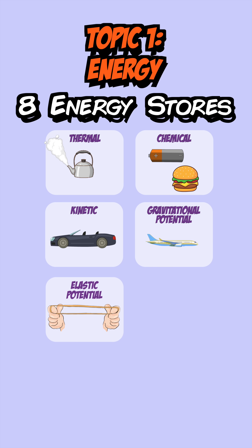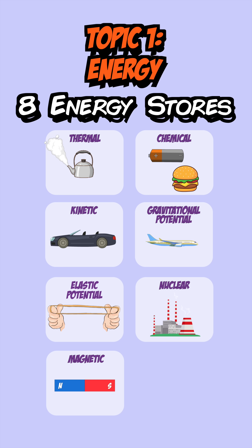Elastic potential energy stores, which is for any object that's stretched. Nuclear energy stores, which is released during nuclear reactions. Magnetic energy stores, which occur due to the attraction and repulsion of magnets. And electrostatic energy stores, which occur due to the attraction and repulsion of electrical charges.